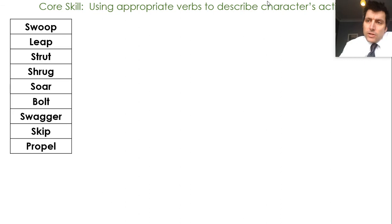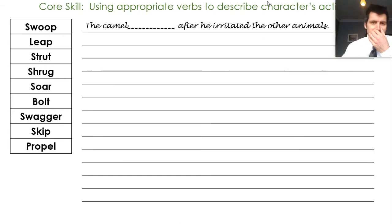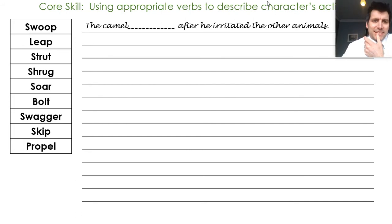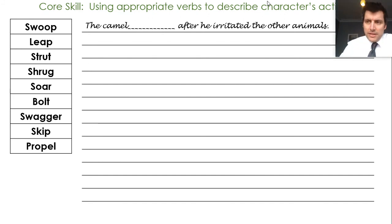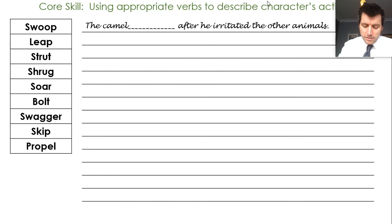These movement verbs — we're going to try and use them in some sentences now. I've got one verb I can think about for the camel. The camel is the subject, and the camel did something after he irritated the other animals. I know from our just-so story that the camel wasn't very pleasant or considerate in his manner towards the other animals.